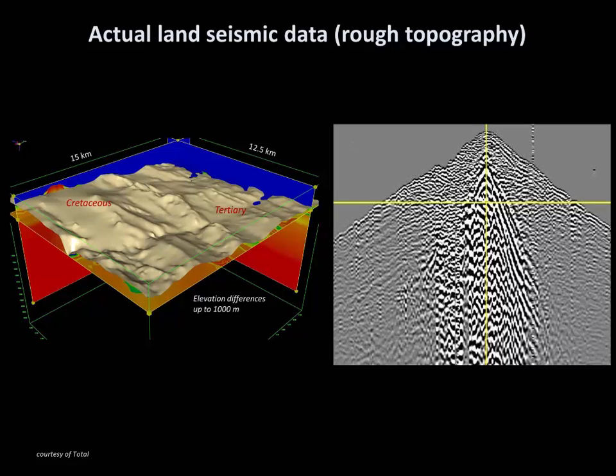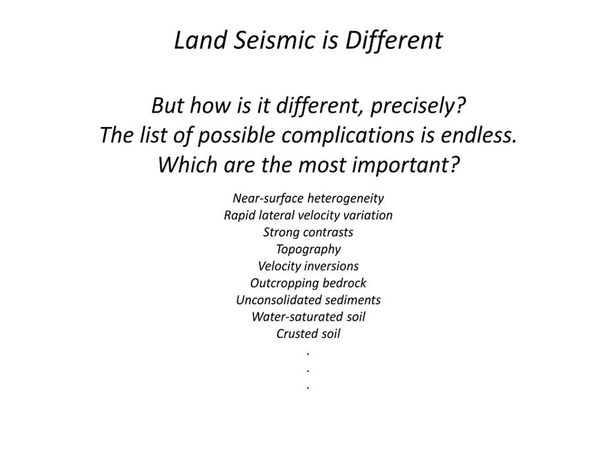Land seismic data is clearly different from marine data, but how precisely? The list of possible complications from coarse and extreme topography to unconsolidated, crusted, or water-saturated soils is virtually endless. Two key goals of SEAM Phase 2 are to quantify the ways in which near-surface heterogeneity affects real land seismic data, and to provide guidance to geophysicists and engineers designing the next generation of data acquisition equipment and survey patterns to reduce the problems of near-surface noise in land seismic exploration.